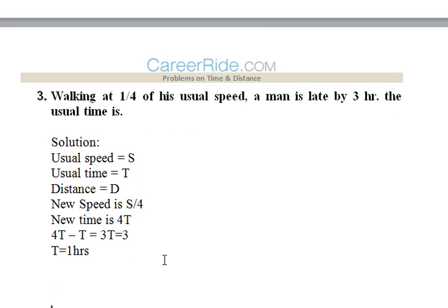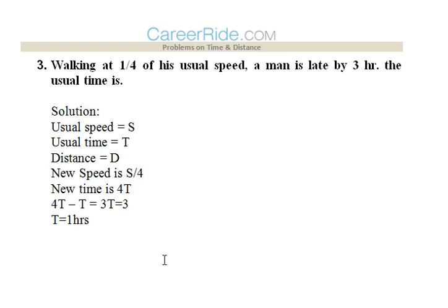Third question: walking at 1/4 of his usual speed, a man is late by 3 hours. What would be his usual time if he walks at his usual speed? We assume the usual speed to be s, usual time to be t, and distance to be d.